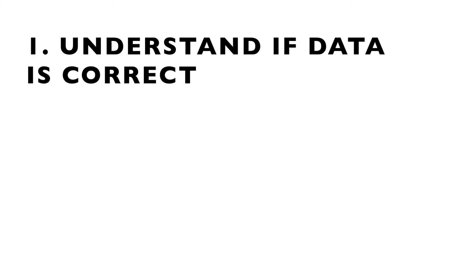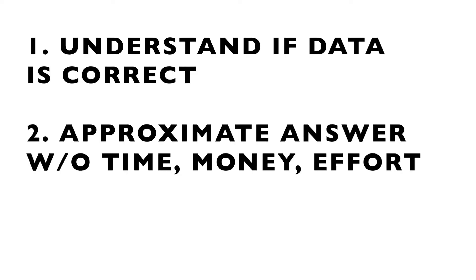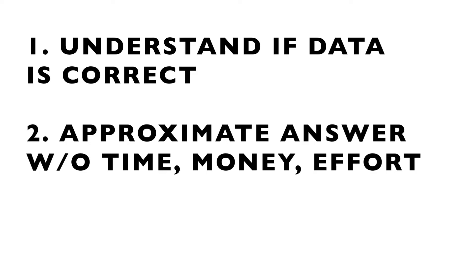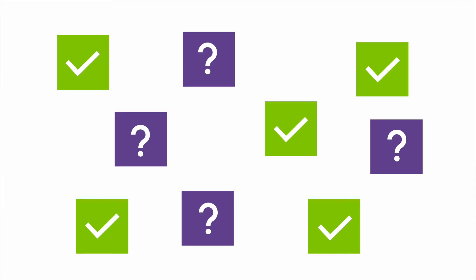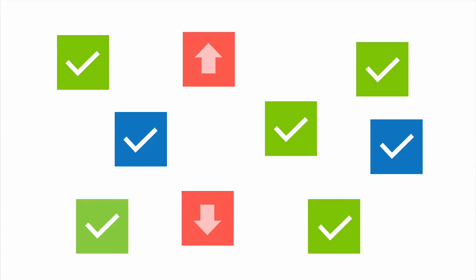It can help you to quickly understand if the data you're looking at is correct. It can help you to quickly get an approximate answer without having to spend the time, money, and effort to measure something with precision. And then if you do need a more precise answer, it helps you to understand what data and analysis you need to come up with. The answer to any Fermi problem is called a Fermi estimate, and the way you get to a Fermi estimate is by breaking down the problem into steps, using the information you do know combined with estimates for the information you don't. The estimations of individual numbers are often close to correct, and overestimates and underestimates cancel each other out.